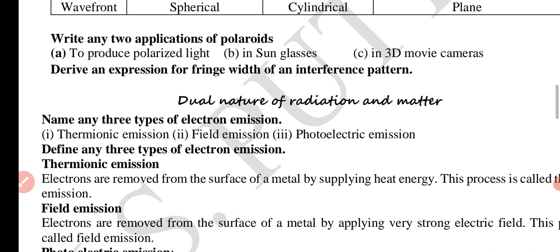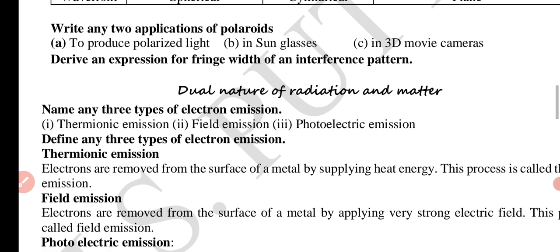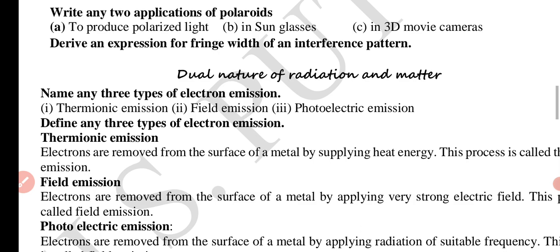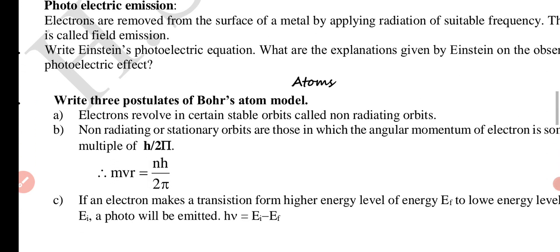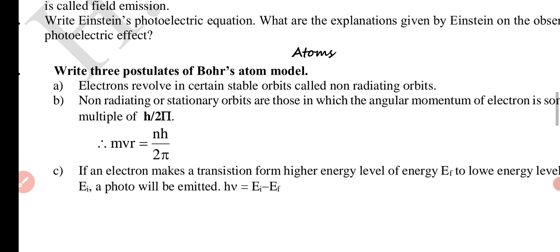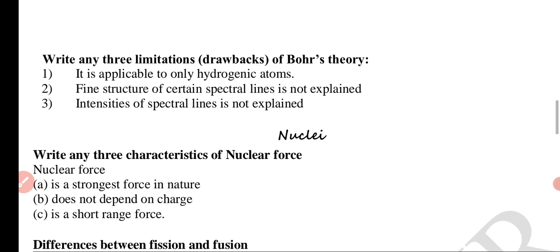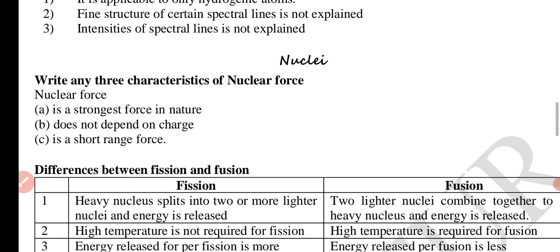Dual nature of radiation and metrology. Name any three types of electron emission: thermionic emission, field emission, and photoelectric emission. This is easy. Write any three limitations of Bohr's theory, Bohr's model drawbacks: it is applicable for hydrogen atoms, fine structure of certain spectral lines is not explained, intensity of spectral lines is not explained.